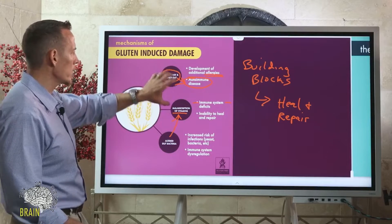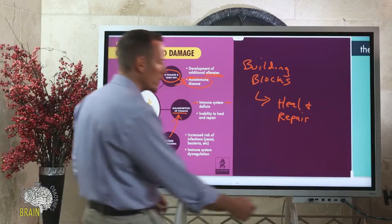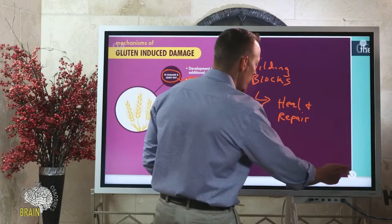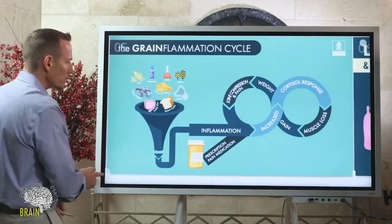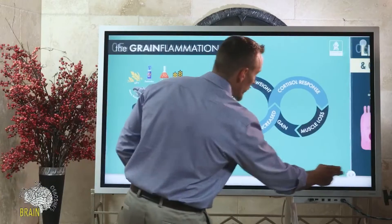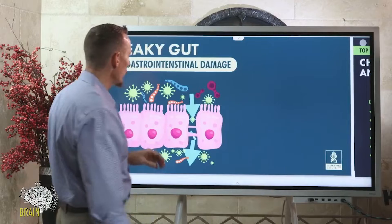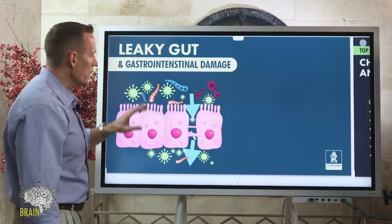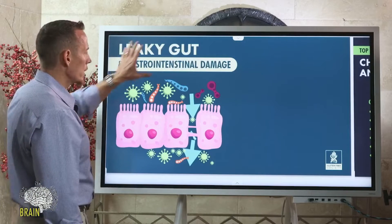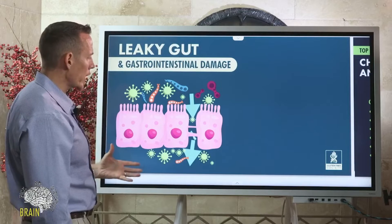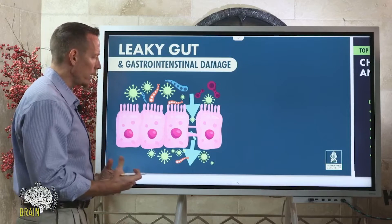We also get increased risk of yeast overgrowth and bacterial infections, and immune system dysregulation. We don't want these things happening chronically as a result of gluten-induced damage. Now, let's talk about leaky gut. Gluten is a major contributor to leaky gut, though certainly not the only cause.